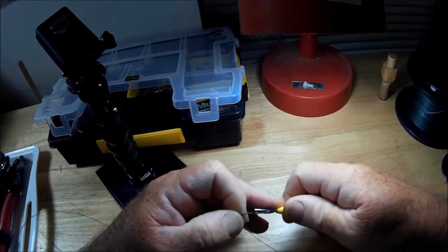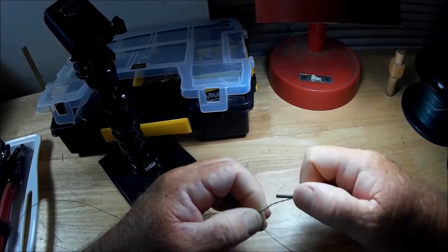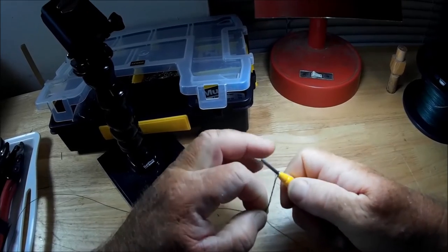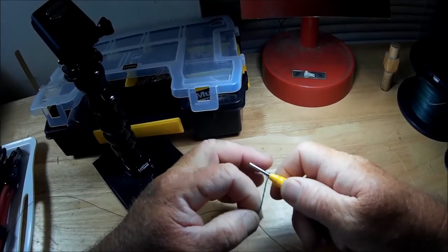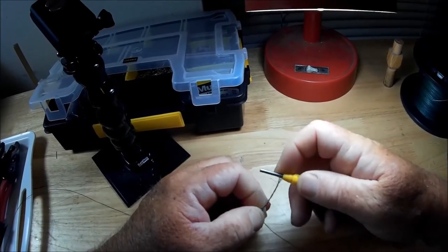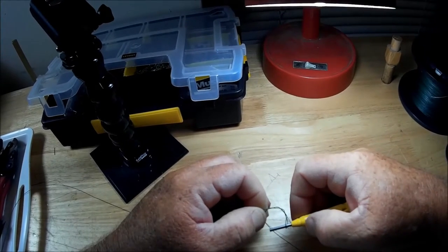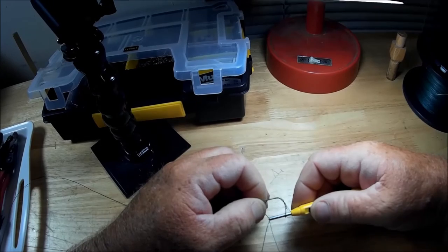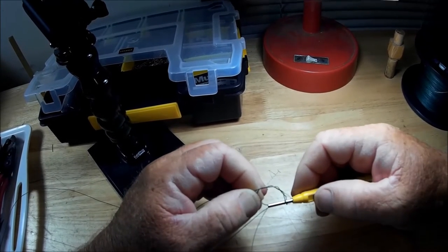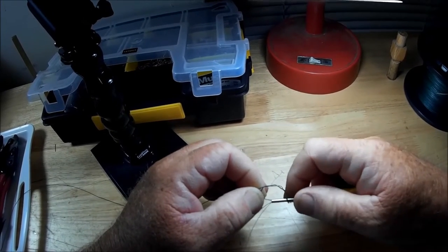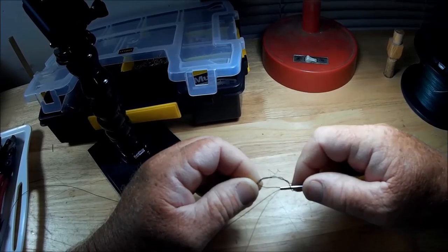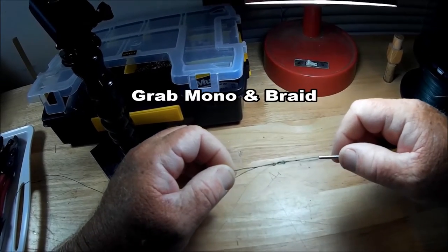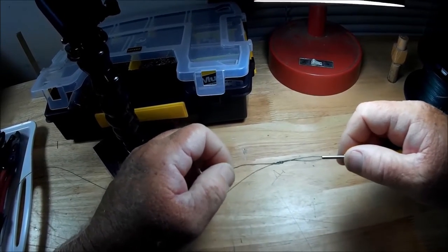Then leaving this up here like that, see how that's twisted up on there. Then you turn around and you take the hook, you stick the hook out, you grab your mono, and you pull this through the loops.